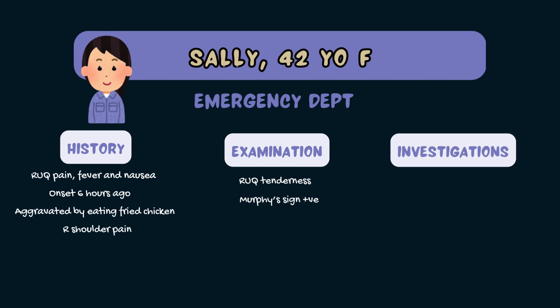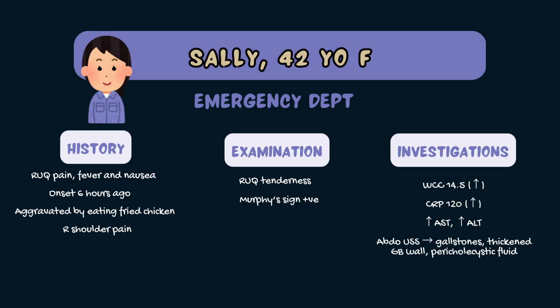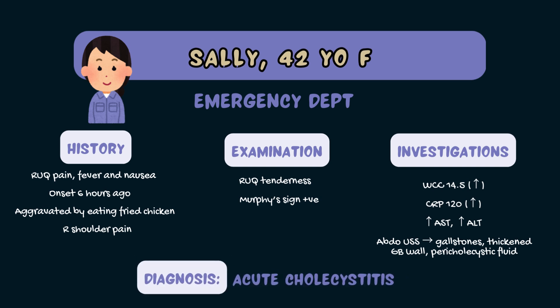Blood tests show an elevated white cell count and C-reactive protein level. They also show an elevated AST and ALT level. An abdominal ultrasound confirms gallstones, a thickened gallbladder wall and the presence of pericholecystic fluid. Sally's presentation is consistent with acute cholecystitis.